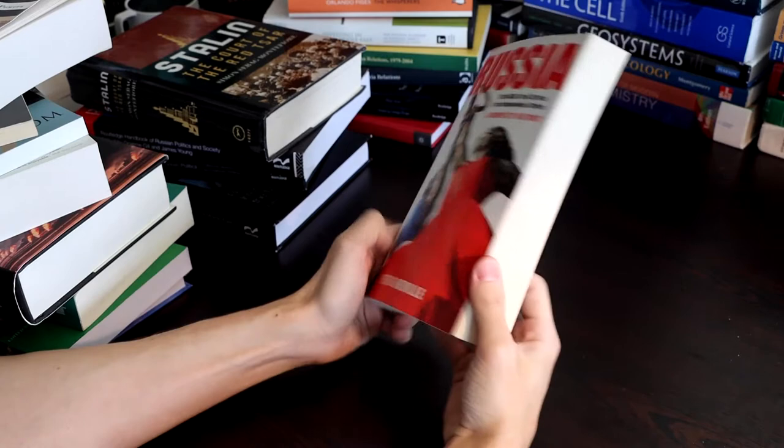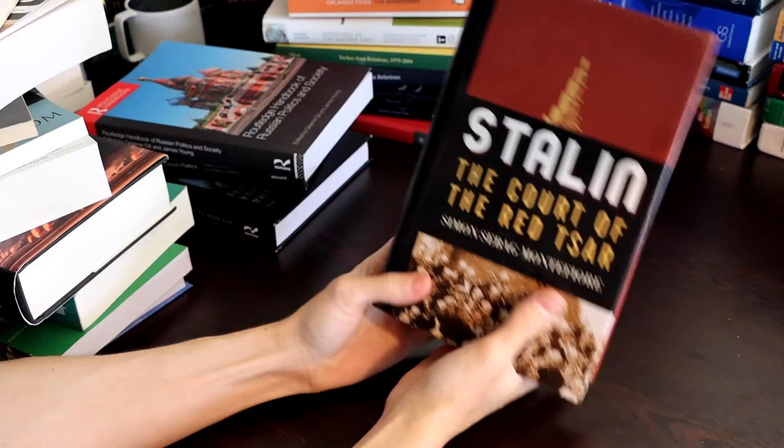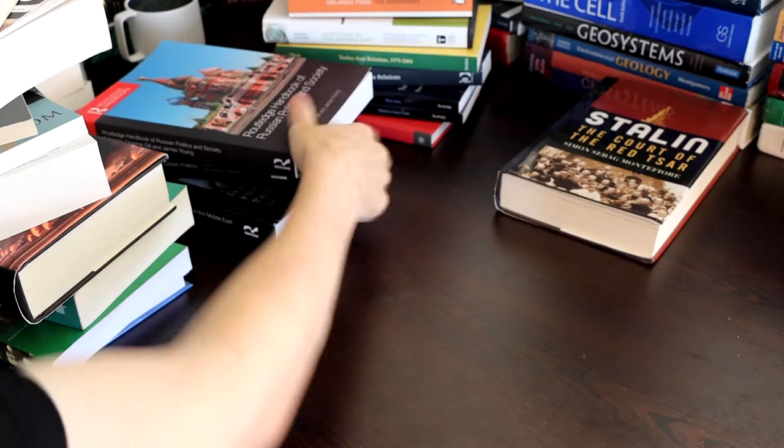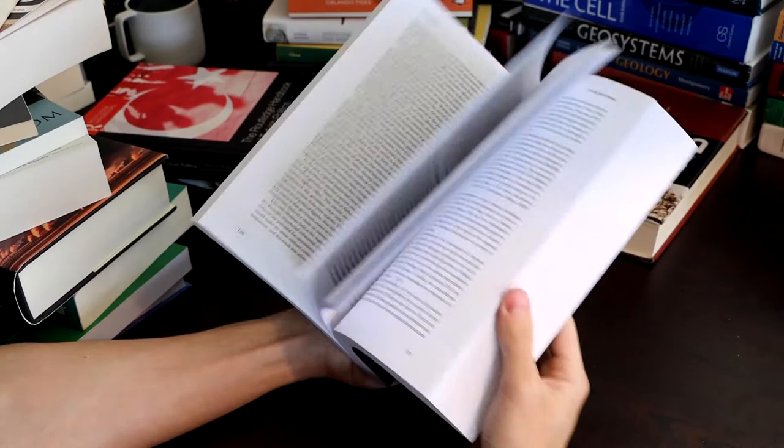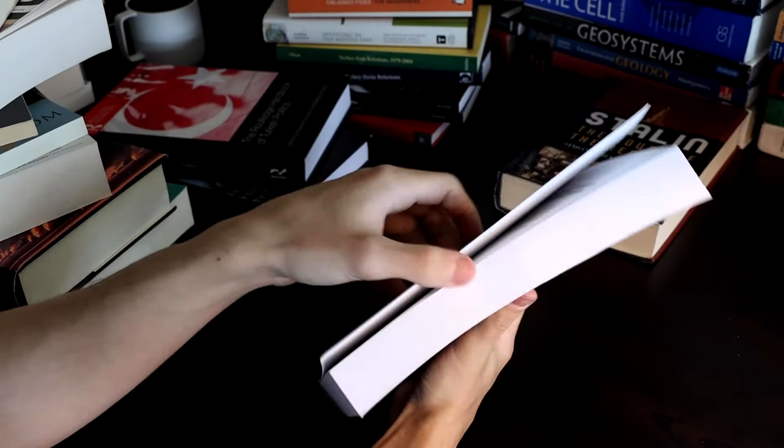A Complete History of the USSR. A Russian history book. Stalin. The Court of the Red Star. I believe this is just a book on Stalin. Routledge Handbook of Russian Politics and Society. I believe I've said this a few times. Whenever I study a country, I'll get an Oxford Handbook or a Routledge Handbook. That gives a general overview of important areas. That's what this book really is.